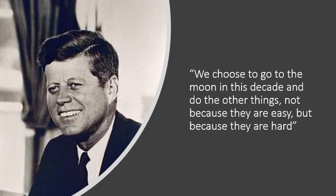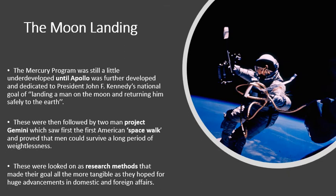By going to the moon, America was showing they were capable of doing difficult things and outdoing the Russians to establish themselves as the dominant superpower. The Mercury Program was quite underdeveloped and basic in terms of space exploration. It wasn't until the Apollo Program came along that the goal of landing a man on the moon and returning him safely to Earth became possible. The Apollo Program was a series of missions, each getting closer and closer to landing on the moon.